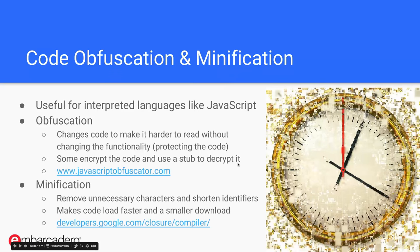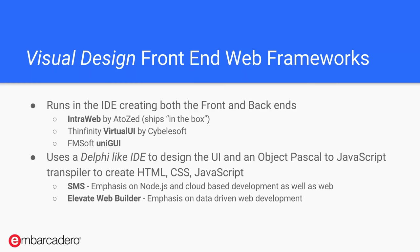Code obfuscation and minification come up frequently in JavaScript. Obfuscation is changing code to make it harder to read — a way of protecting intellectual property so someone can't reverse engineer your logic. Minification removes unnecessary characters and shortens identifiers to make the JavaScript load faster. Note that most web servers use compression, so the impact of minification may not be huge, but it's still useful to know.